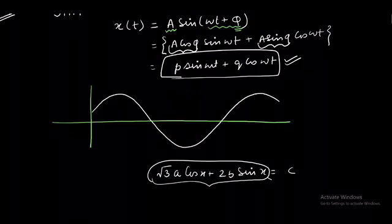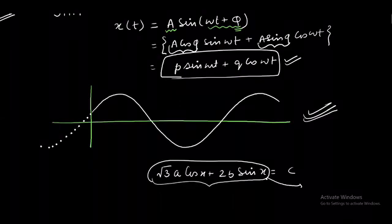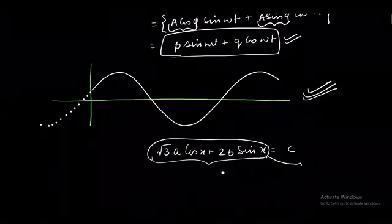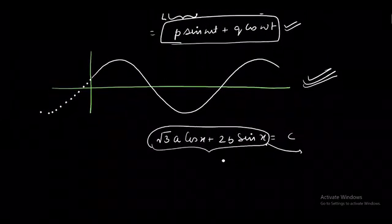What was the question? The question says that I have to solve the equation √3a cos x + 2b sin x = c. Look at the left hand side of this expression. This is nothing but the displacement function kind of expression. This looks like the displacement function. That means if I trace the graph of this function, this graph will also look like the graph of SHM.